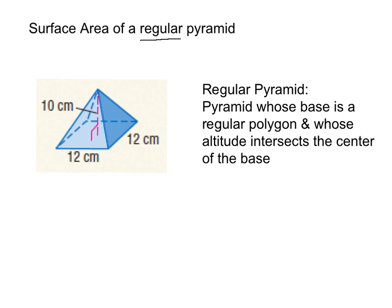The part that says 'whose altitude intersects the center of the base' — altitude is just a geometry word for height. That means the pyramid looks like you'd expect, where it's not leaning over to one side; everything is straight up above the middle. If it is leaning to one side, we call that an oblique pyramid. But here we're talking about regular pyramids.